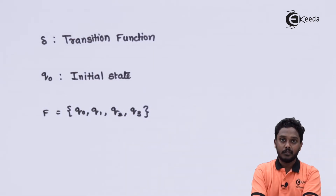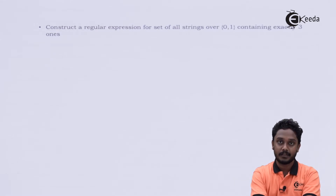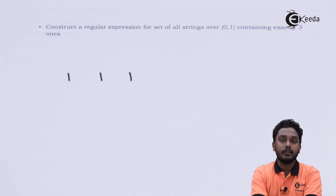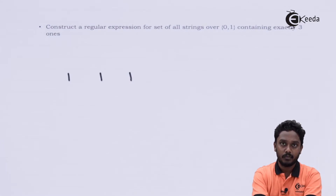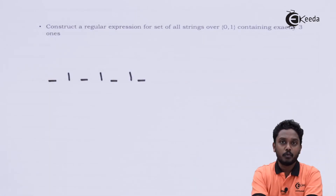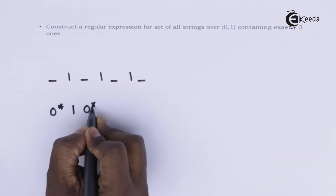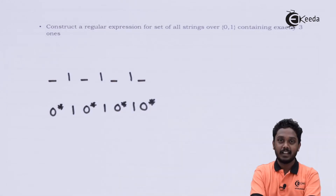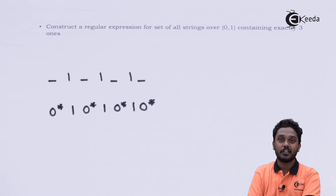We have constructed both NFA and regular expression. Now the next question asks us to find the regular expression for the set of strings containing exactly 3 ones. I have written 3 ones — exactly 3 ones — and in between them I can have any number of 0s. There are 4 vacant positions, all filled with 0*. The required regular expression is 0*1 followed by 0*1 followed by 0*1 followed by 0*.